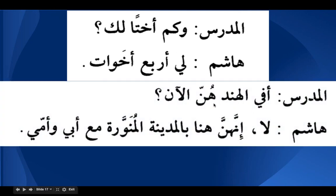The teacher asks: Afil hind hunna al-ana — are they in India now? Hunna refers to the sisters, who are feminine. Hashim says: La, inna hunna — inna and hunna is ismu Inna, mansoob. Al-ana is zarf meaning 'now.' They are bil madinah al-munawwarah, ma'a abi wa ummi — in Madinah al-Munawwarah with my father and my mother; abi and ummi are mudaf and mudaf ilayhi.